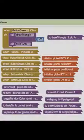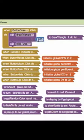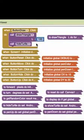For example, if I switch over to the blocks editor for a moment, you can see that when I click on the button draw, it will draw a triangle by calling a draw triangle procedure and passing it the length of the side as 100.